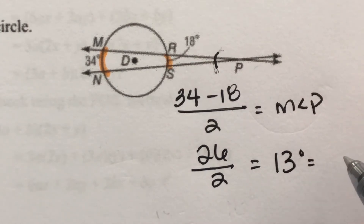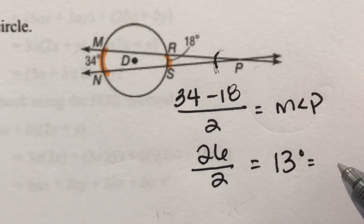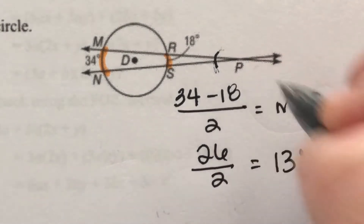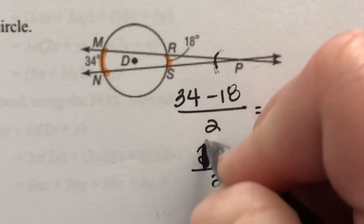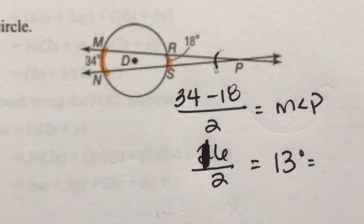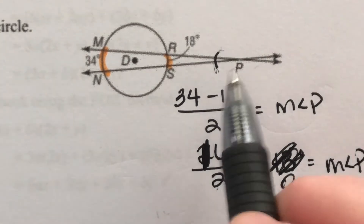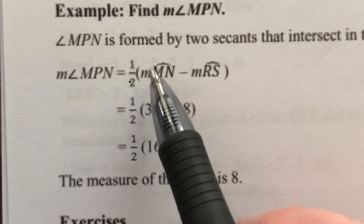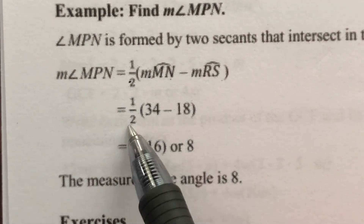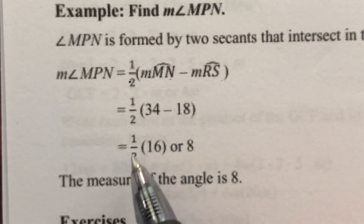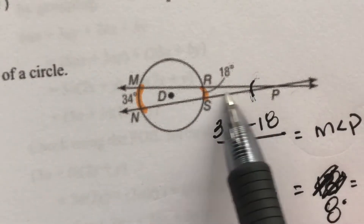16 divided by two gives us eight. So the measure of this angle — one half times the big arc minus the little arc — 34 minus 18 divided by two: 34 minus 18 is 16, divided by two is eight. So the measure of this skinny little angle, when our two lines intersect, is eight degrees.